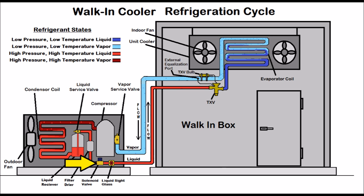On the system you're working on, it may or may not have a solenoid valve. If it doesn't have a solenoid valve and doesn't have a pressure control, then that system is just turned on and off by a mechanical or electronic thermostat. In this case, we're showing a liquid solenoid valve used as a pump-down feature on a system with a low pressure control. The sub-cooled liquid refrigerant heads through the liquid solenoid valve and then through the liquid sight glass.